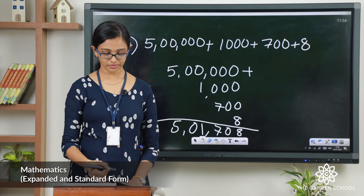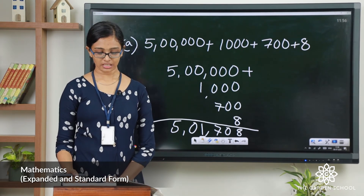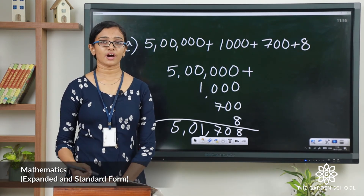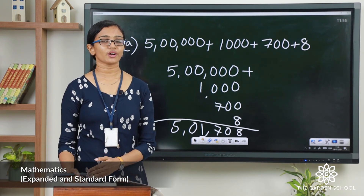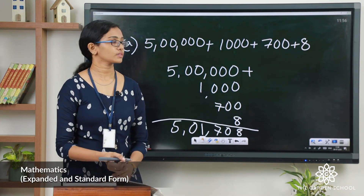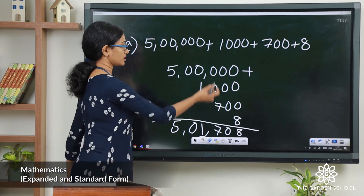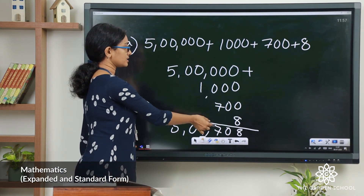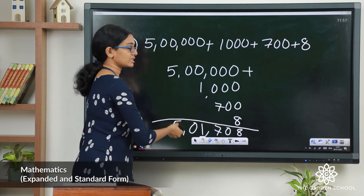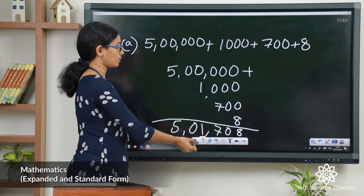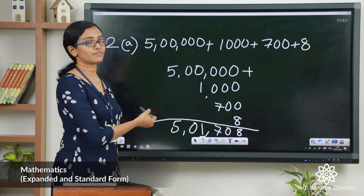Now let us see the first question from the second set of questions. Question A is 500,000 plus 1,000 plus 700 plus 8. To get the standard form from the expanded form, arrange all the numbers vertically in appropriate columns and add them together. I have arranged all the numbers vertically here so that the ones come in the same column, tens in the same column, and so on. When you add them together, the resulting standard form is 5,01,708.